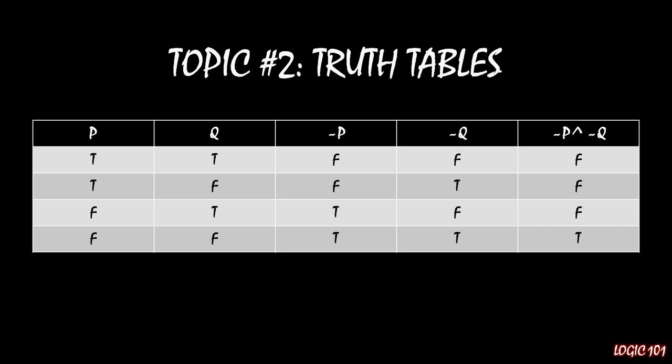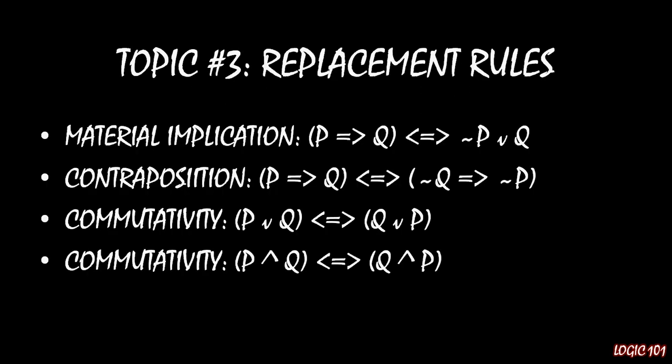And to do that, we need to first learn how to make inferences. And this is going to be a two-stage process. In topic three, we're going to learn replacement rules. Replacement rules are rules that allow us to convert one premise into another premise which is identical but logically constructed differently. And this is going to be useful because it's going to allow us to manipulate things a little bit more easily in the logical proofs that are going to follow.